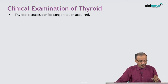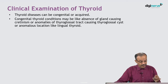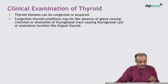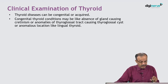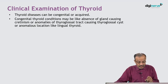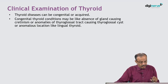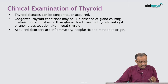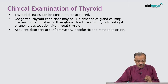Clinical examination is a very meticulous and important thing. You have to remember thyroid diseases can be congenital or acquired. Congenital thyroid conditions may include absence of the gland causing cretinism, anomalies of the thyroglossal tract causing thyroglossal cyst, or anomalous location like lingual thyroid.